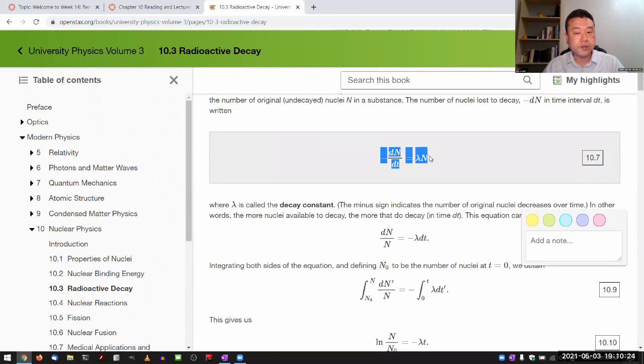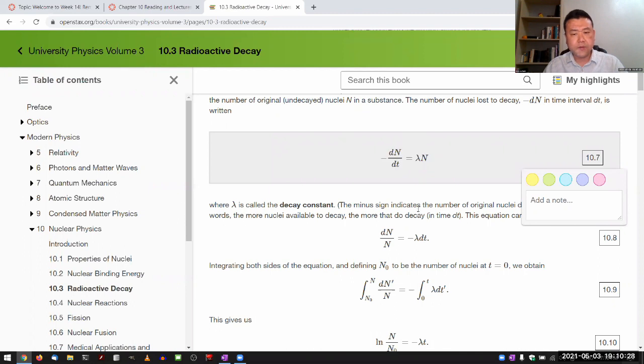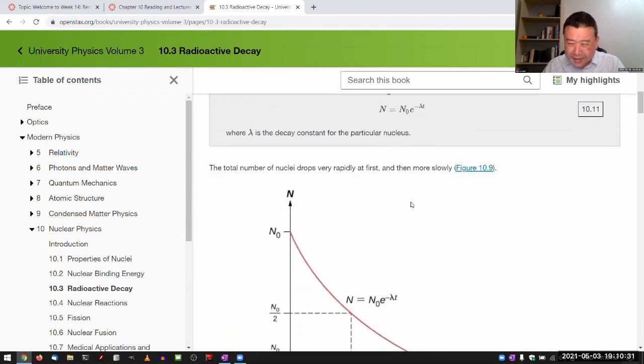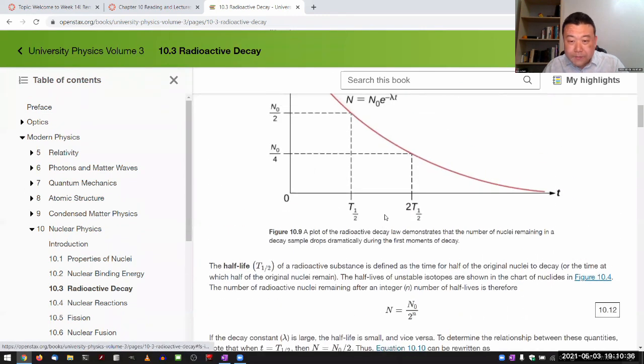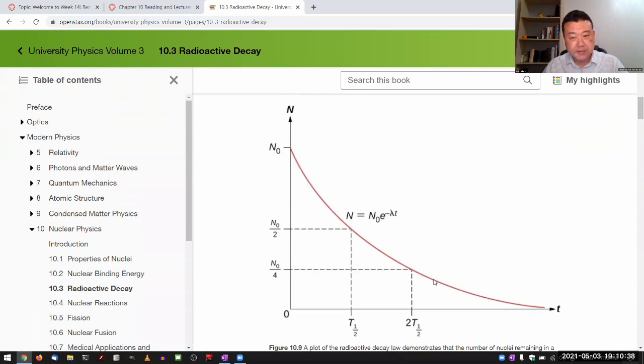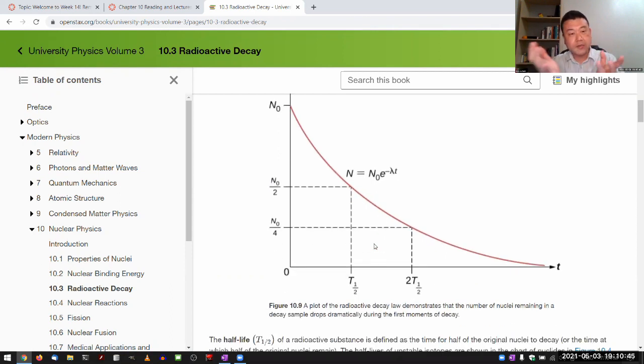I don't think your textbook really points this out. One of the implications of something that decays in this form is that these atoms are ageless. You cannot take a sample of pure isotopes and know how old they are, because whether they've been around for one half-lifetime or two half-lifetimes, this particular sample will have equal chance of decaying in the next half-life.